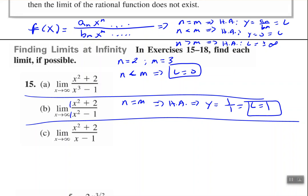For part c, the limit of x squared plus 2 over x minus 1 as x approaches infinity. We see that n is greater than m, so we know that this either approaches positive infinity or negative infinity. Since x is approaching positive infinity, we're using positive numbers. My leading coefficients — both of those are positive. Plugging in positive numbers, these are going to continue to get larger and stay positive. Therefore, although the limit does not exist, it approaches positive infinity.